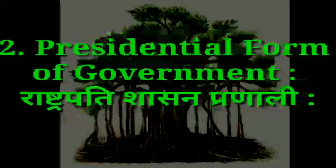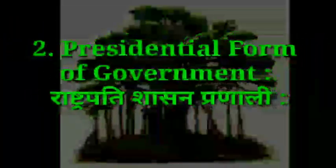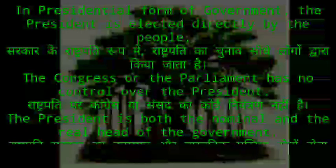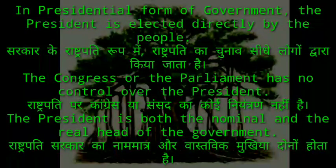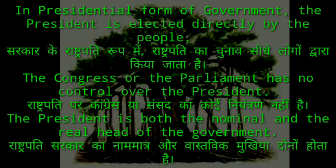2. Presidential form of government — in this system, the President is elected directly by the people. The Congress or Parliament has no control over the President. The President is both the nominal and the real head of the government.